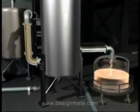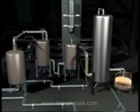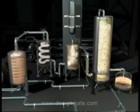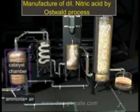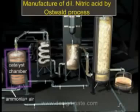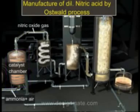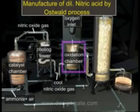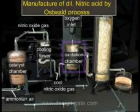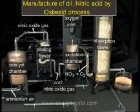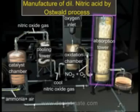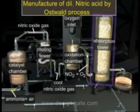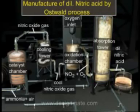In summary, dilute nitric acid is synthesized from ammonia via the Ostwald's process. A mixture of ammonia and air is passed through a catalyst chamber where ammonia is oxidized to nitric oxide. This nitric oxide is cooled in the cooling chamber, then enters the oxidizing chamber where it combines with oxygen to form nitrogen dioxide. The nitrogen dioxide passes through the absorption tower, where it is dissolved by water to form dilute nitric acid.